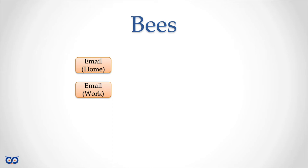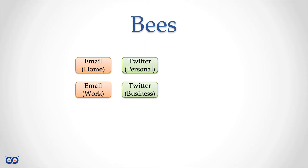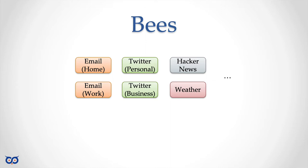Similarly, you can have an email bee configured to talk to different email systems. You can have a Twitter bee configured to monitor your Twitter account or post to it. You can have a bee for Hacker News, another for weather information, and so on. There can be many, many types of bees. This Beehive program gives you these plugins and you can also write your own.